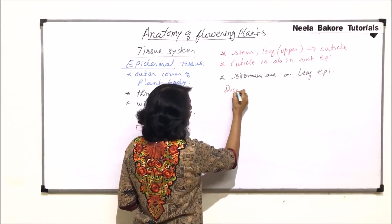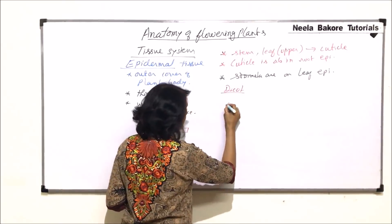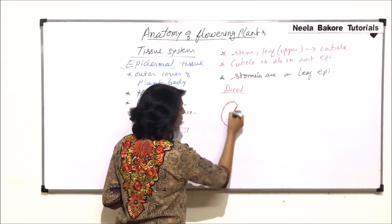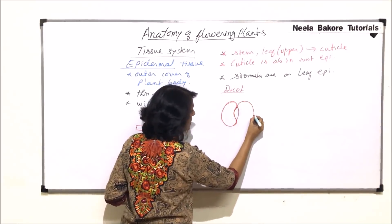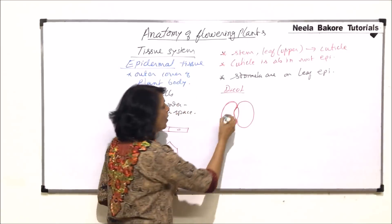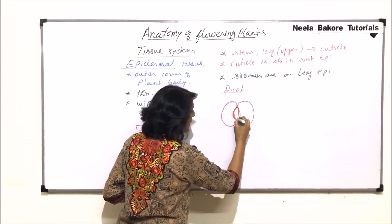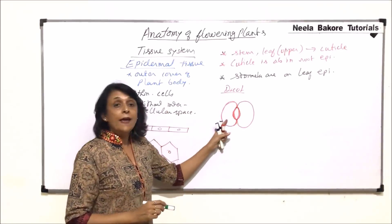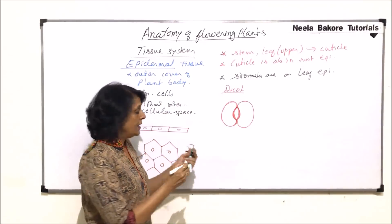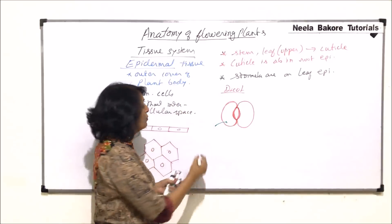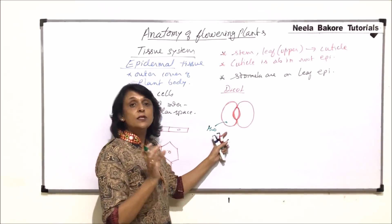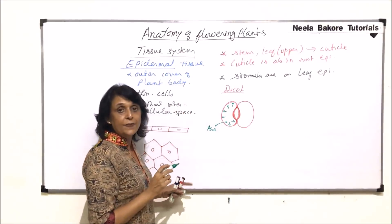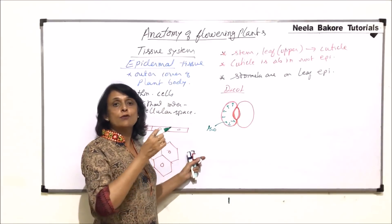In dicot plants, the guard cells are bean-shaped or kidney-shaped. One guard cell is bean or kidney shaped, and the other is again bean or kidney shaped. The side where we have this curvature is thick-walled compared to the rest of the membrane. When stomata open due to endosmosis, water moves in and the cell becomes turgid, exerting pressure on all sides.